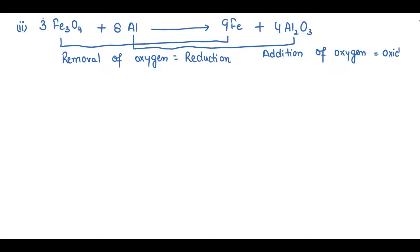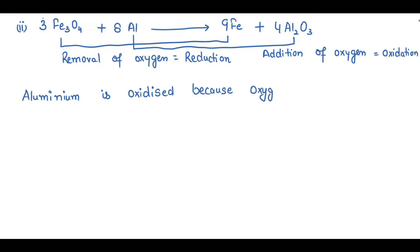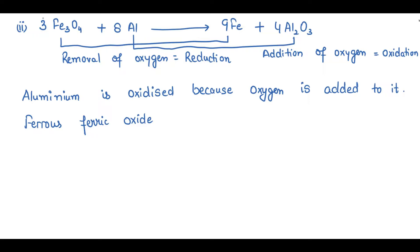Addition of oxygen means oxidation is happening, so aluminum is oxidized because oxygen is added to it. Now, regarding Fe₃O₄ — I am calling it ferrous ferric oxide because in Fe₃O₄ there are two oxidation states of iron: +2 and +3. That's why I am calling it ferrous ferric oxide.